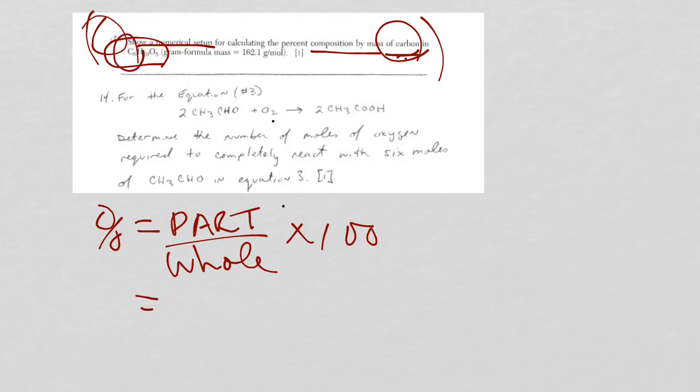So what does that mean? Well, it's 12 times 6. That's the part over the whole thing, which they give you 162.1. That's times 100. Now, this was the numerical setup. You don't even have to bother multiplying 12 by 6 if you don't want to. Now, on to the next question.